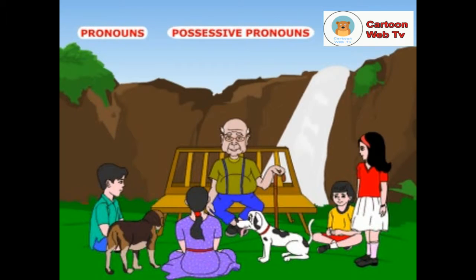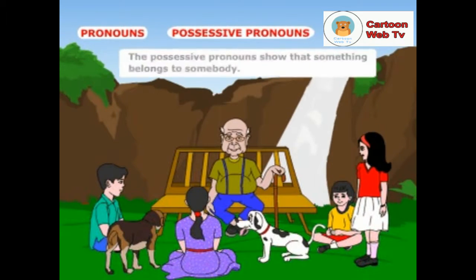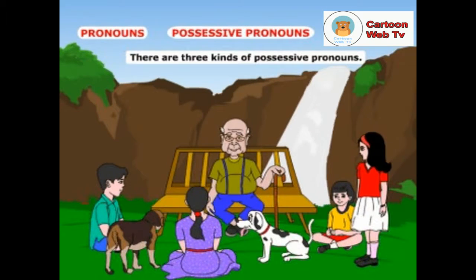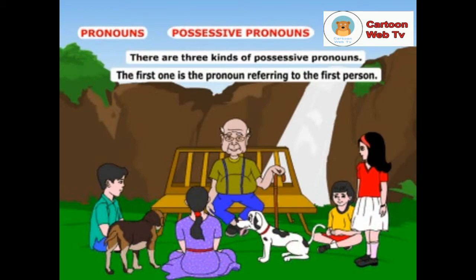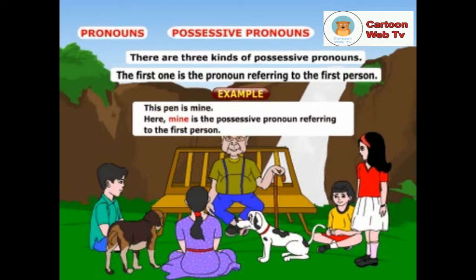Children, what about possessive pronouns? The possessive pronouns show that something belongs to somebody. There are three kinds of possessive pronouns. The first one is the pronoun referring to the first person. Example: this pen is mine. Here, mine is the possessive pronoun referring to the first person.